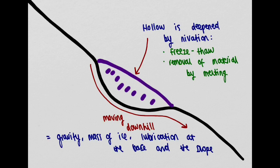This moves downhill as a result of gravity, the mass of ice, lubrication at the base and the slope that the hollow and snow sits on. It moves in a rotational movement because of the slope and overlying pressure.